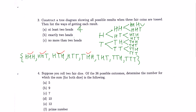So the answer is four. Part B says exactly two heads. Exactly two heads means three heads is not included — so we count only the outcomes with exactly two heads.